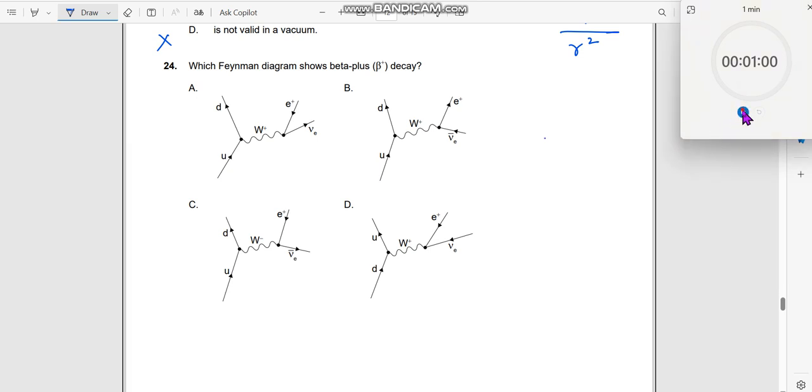Okay, next question, 24th one, which Feynman diagram shows beta plus decay? So what does beta plus decay tell you? Beta plus decay tells you that a beta positive particle has been produced when a proton decays into a neutron, neutron plus a beta particle, beta positive plus a neutrino.